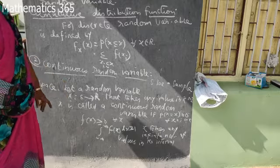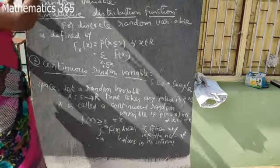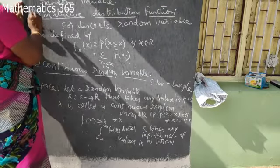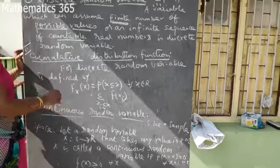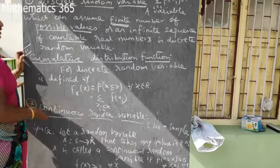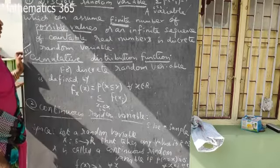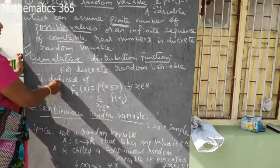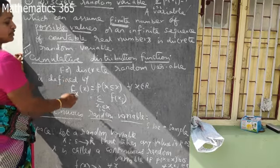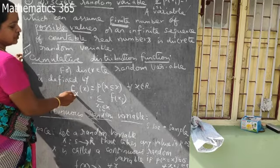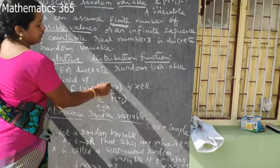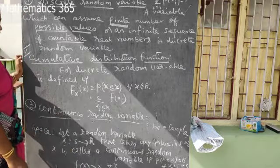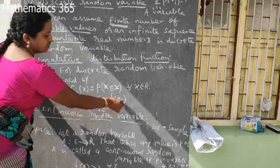A continuous random variable takes an infinite number of values over an interval. Now, the cumulative distribution function — capital F of x — for a discrete random variable is defined by F of x equal to the summation of p of x, for x less than or equal to capital X.